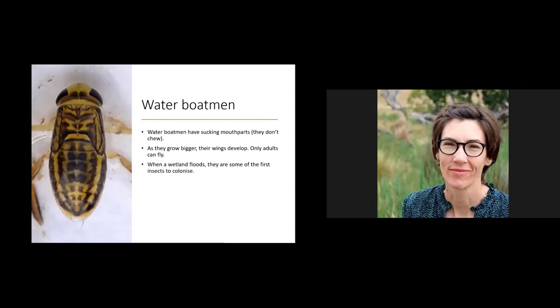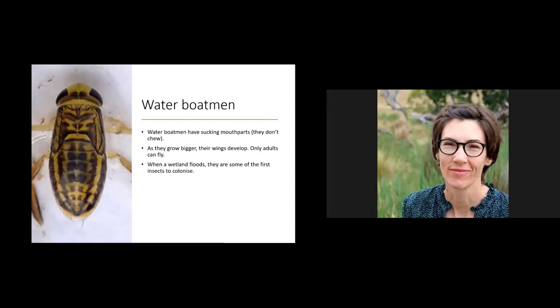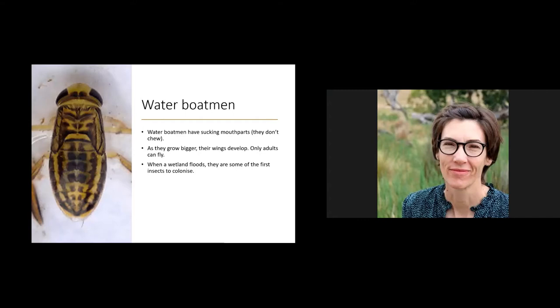The water boatman in the photo is actually a juvenile — it doesn't have wings yet, just little wing buds. Once it's an adult it will have wings folded over the back of its abdomen; only the adults can fly. This is really important because they're early colonizers of wetlands — when a wetland first floods, they'll be among the first insects to colonize, flying from neighboring wetlands or rivers.